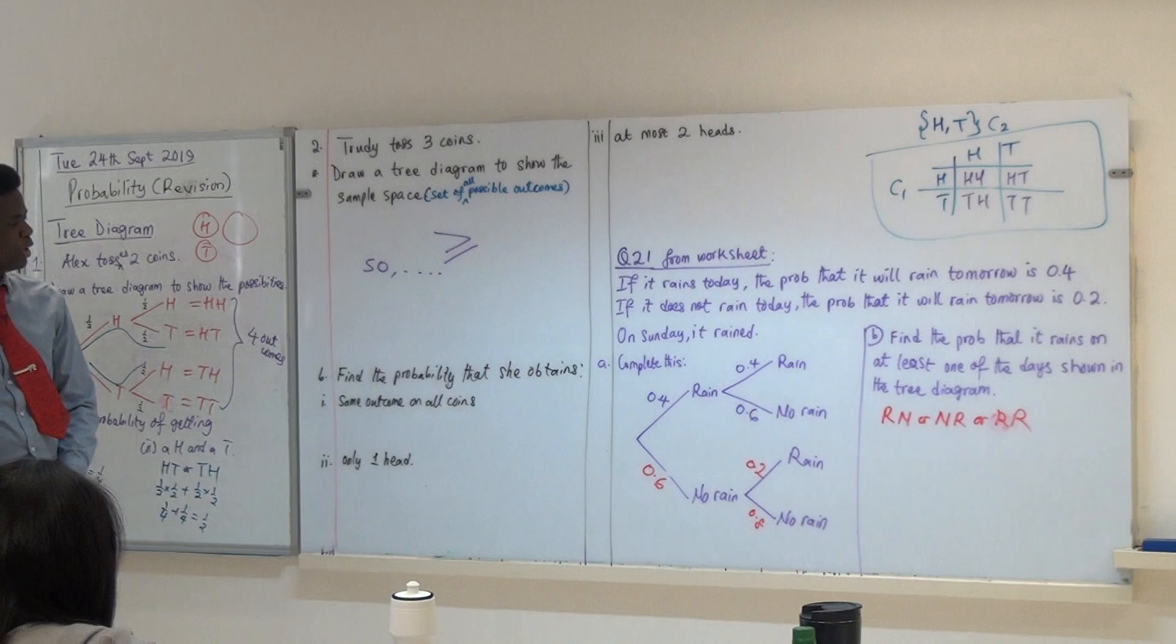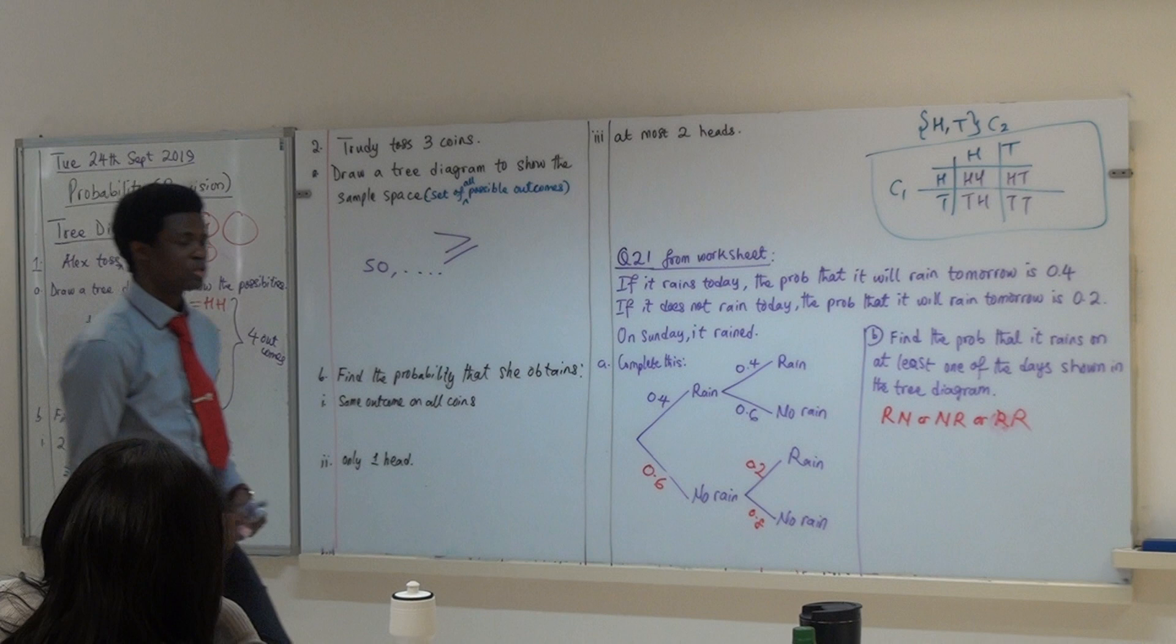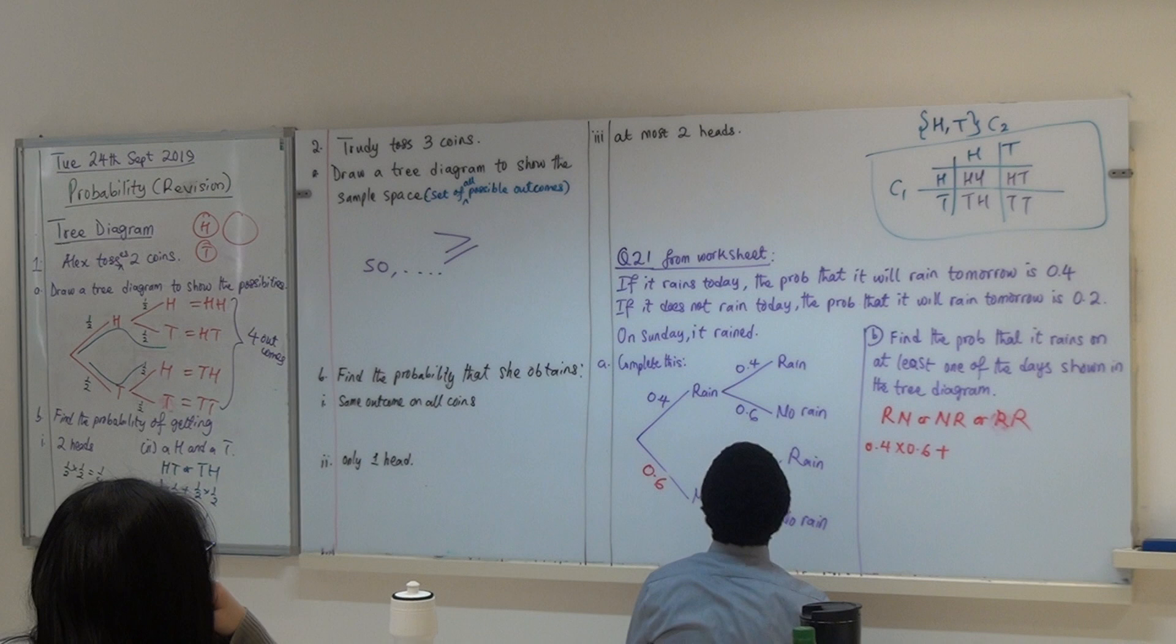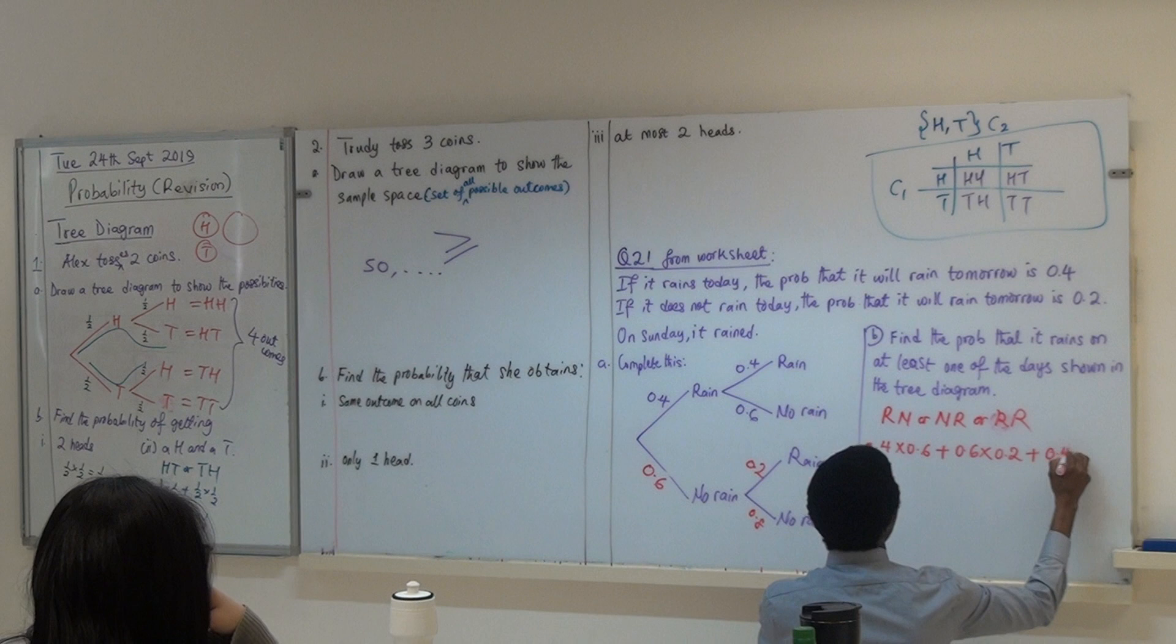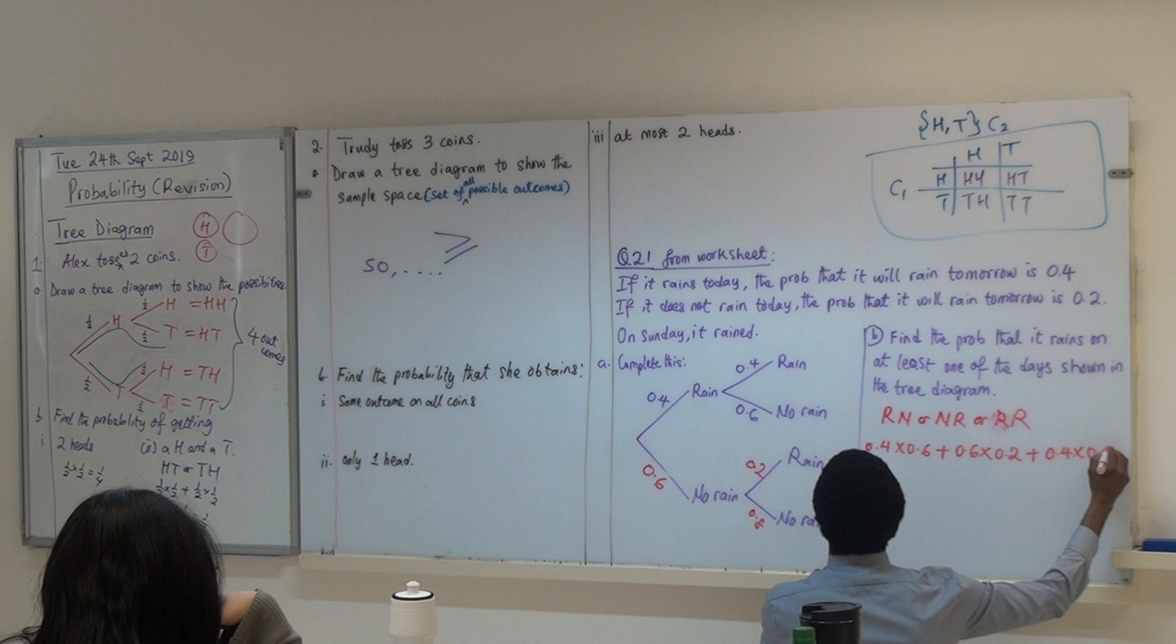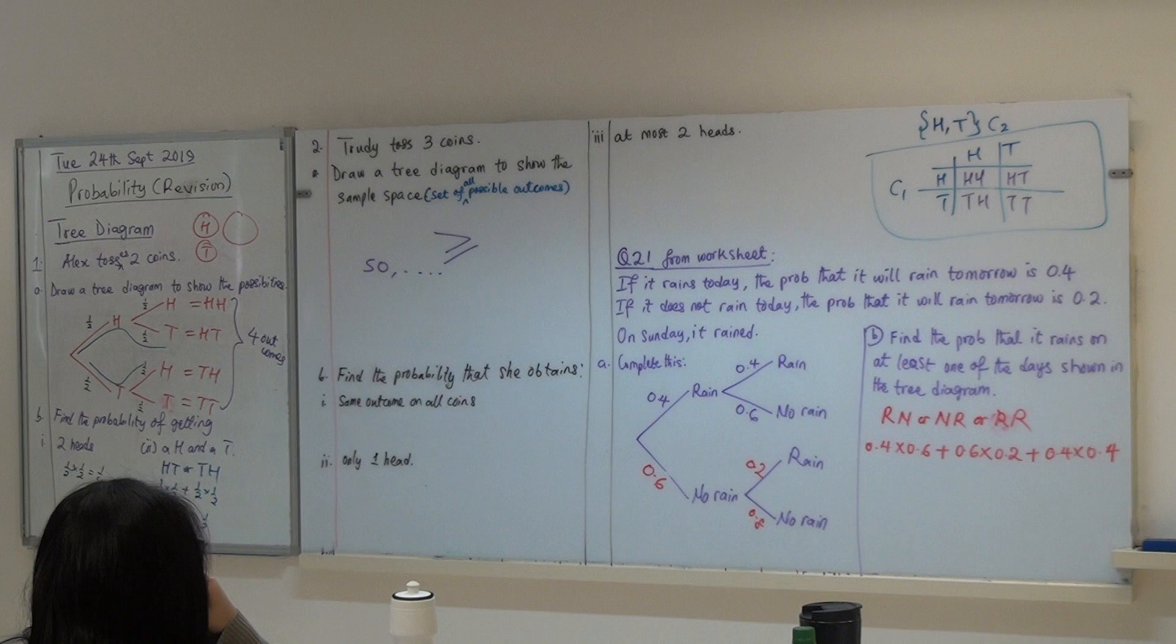So, let's see. From this tree diagram, what is the RN going to give us? 0.4 times 0.6 plus, what about the NR? 0.6 times 0.2. What about the RR? 0.4 times. So, I'm doing for what? Four. Four or six? Four. Four. Rain, rain. So, whatever you get will be your probability.